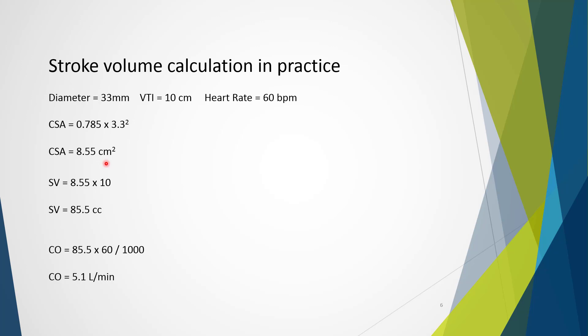It's then very simple to work out our stroke volume, which is cross-sectional area times VTI. So 8.55 times 10 works out to be 85.5 cc's or mils. It's then very simple to work out our cardiac output. So cardiac output is 85.5 times our heart rate of 60 beats per minute, and then we just need to adjust for mils being converted into liters so we divide by 1000. And doing so we get a cardiac output of 5.1 liters per minute, well inside the normal range.